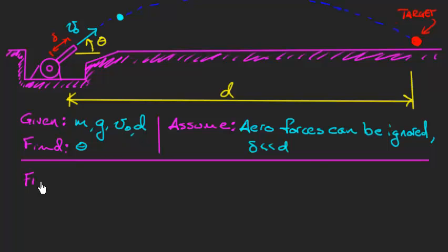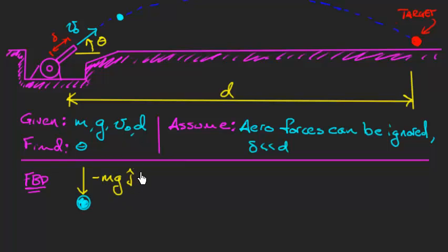Our next order of business is to draw a free body diagram — here we're drawing it for the cannonball itself. We ask: what forces are acting on the ball? The most obvious one is gravity, acting straight down. So we put in the weight, which is minus mg in the j-hat direction. I'm calling i horizontal and j vertical. A lot of students want to put in a force pushing the ball out of the cannon here, but we're not going to do that.